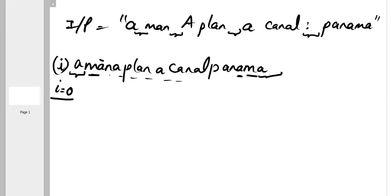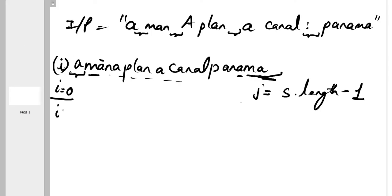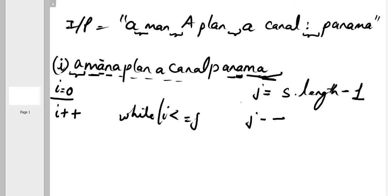To check this, we set two pointers: one on the left side (i = 0) and one on the right side (j = string.length - 1). If the first and last characters are the same, we increment i and decrement j to move inward. We keep checking all characters while i is less than or equal to j.